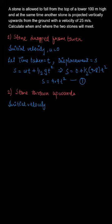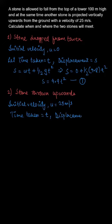Now for the second case, when the stone is thrown vertically upwards, its initial velocity u is given to be 25 meters per second. The time t will be the same and let us assume the displacement s' from the ground to the point where they meet.